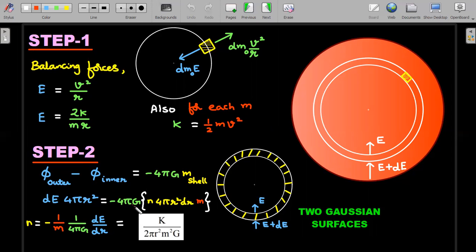Strike out the common factors of 4πr² on both sides. The value of n will be simply 1/m times 1/(4πG) times dE/dr. We already know dE/dr is equivalent to 2K/(mr²), so substituting this here, you end up getting the required answer which is given in option B.